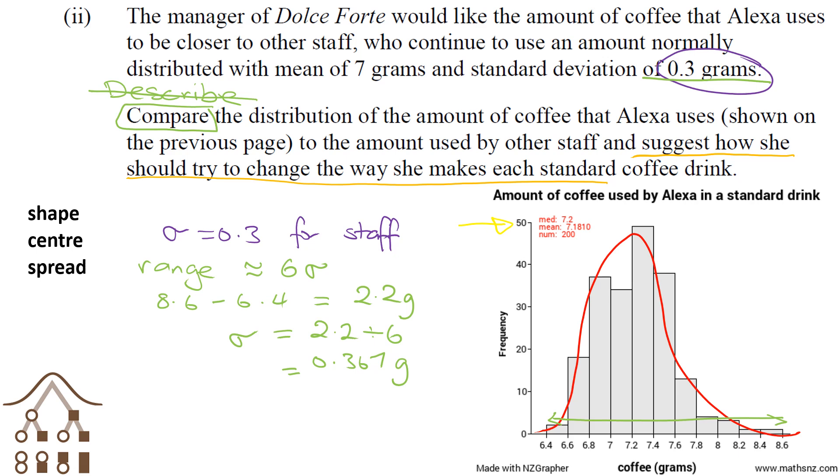Alexa should use a little bit less coffee because she needs to bring her mean down from 7.2 down to 7. She's not quite as consistent as the other staff—she should try to be more consistent. Those two suggestions give us an idea of how she should change the way she makes coffee to be more like the other staff.